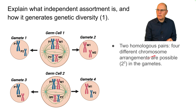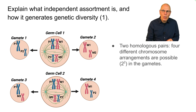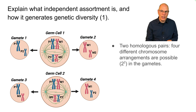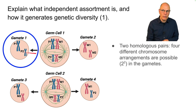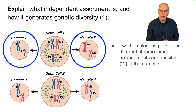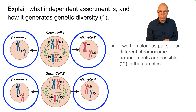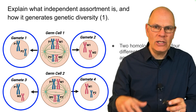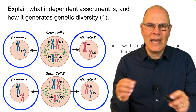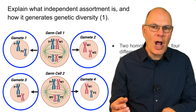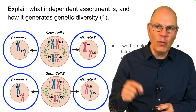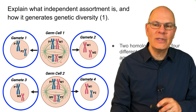With two homologous pairs, four different chromosome arrangements are possible — that's 2 squared — in the gametes. During anaphase, we pull these homologous pairs apart. One possible arrangement gives us paternal chromosome 1 and paternal chromosome 2 in one gamete, and maternal chromosome 1 and maternal chromosome 2 in the other. Another arrangement gives paternal chromosome 1 with maternal chromosome 2, and so on. You can try different combinations, but you won't get more than four in a system with four chromosomes as its diploid number.